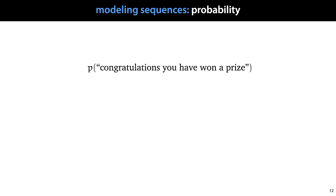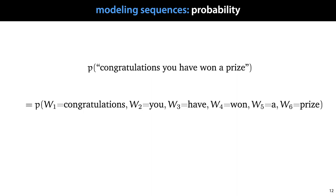The fundamental idea is that we want to model the probability of seeing a particular sequence — for instance, the sentence 'congratulations, you have won a prize.' The first thing we do is break up the sequence into its tokens. In this case we model this sequence at word level, so we break it up into its words, and model each word in the sequence as a separate random variable. Note that these random variables are decidedly not independent: if word 5 is an article like 'a', you're much more likely to see a noun like 'prize' following it than another article.